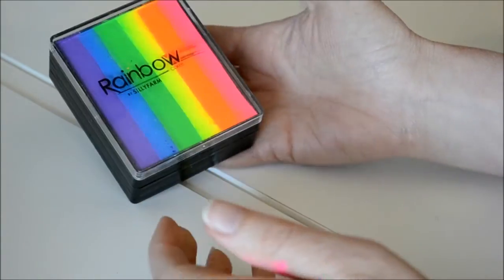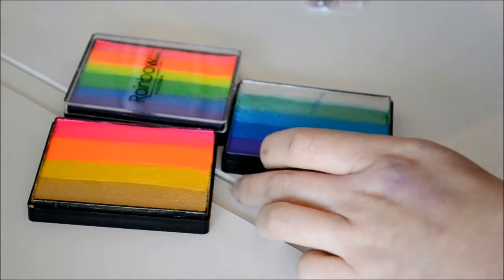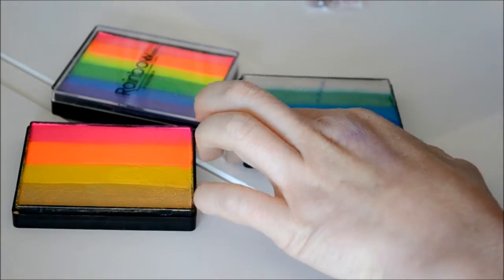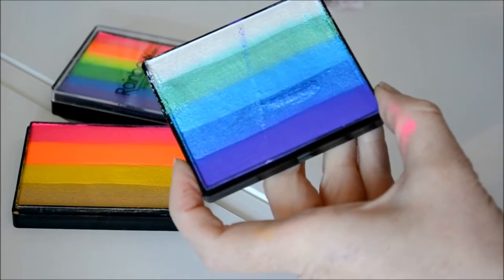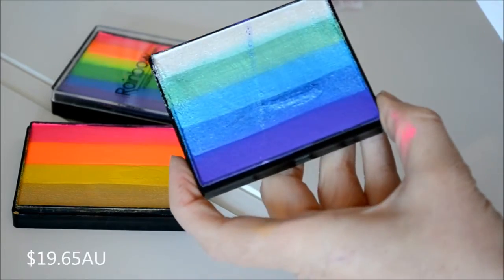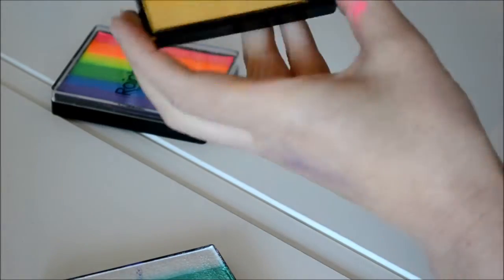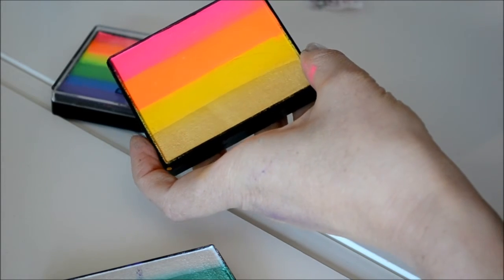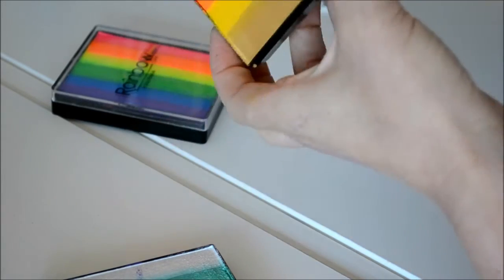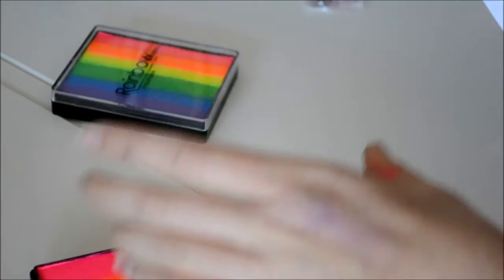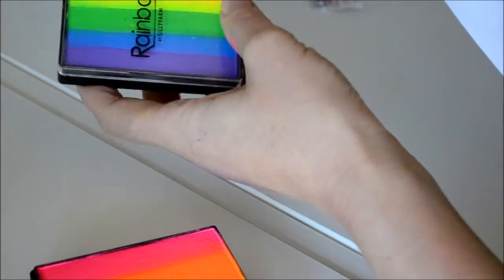The prices in Australia are $19.65 for the Mermaid. Summer Sunrise cake is $19.65, same price as the Mermaid, and the Neon Rainbow cake is a little bit more at $24.65.